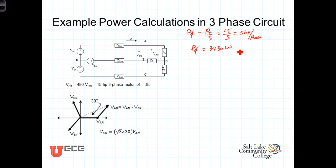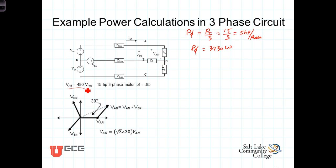Our task is to find out what the current requirements are going to be for this motor, given its power. We're also told that the line voltage — the voltage from the A-line to the B-line — is 480 volts.